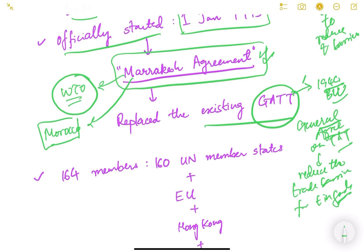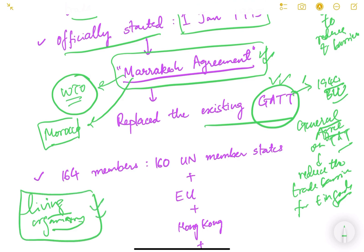Once an agreement is signed, countries keep negotiating — sitting every year, every two years, every six months — discussing problems and new challenges in the evolving world. Such agreements are like living organisms; they need continuous evolution and updation. GATT was one such agreement, leading to multiple rounds of negotiations. In one of the final rounds, it was agreed that WTO would be formed to replace GATT with a more comprehensive, holistic agreement in 1995.